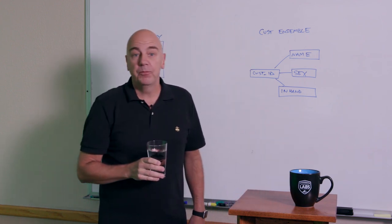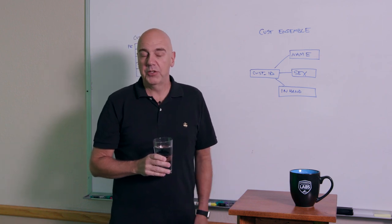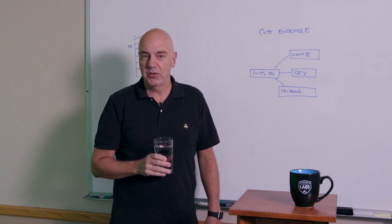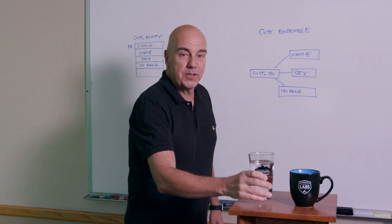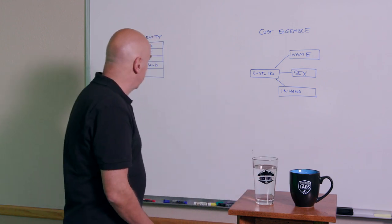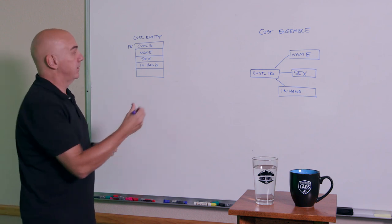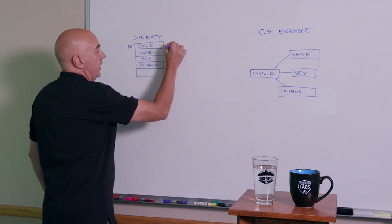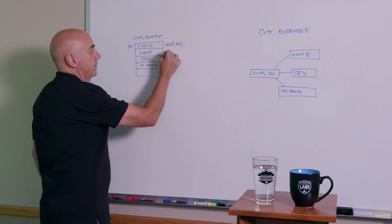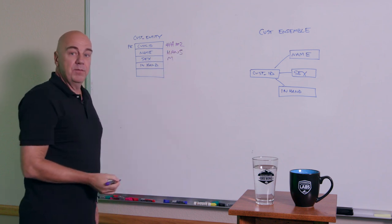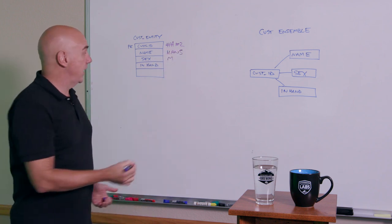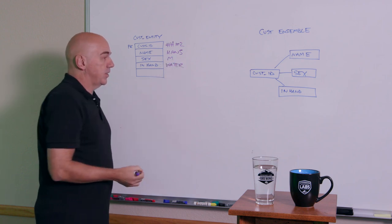You're going to take a picture of me now. Picture you took a picture of me, imagine you just did, and let's capture that information. The information says you've got a customer ID, let's say HH102, my name is Hans, I'm a male, and in my hand was some water.